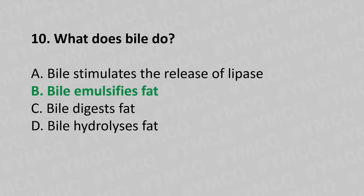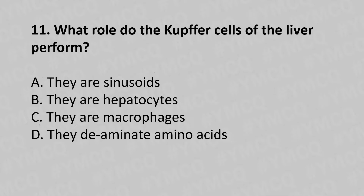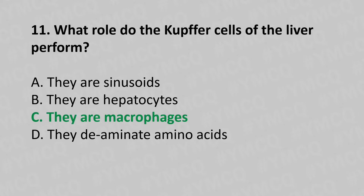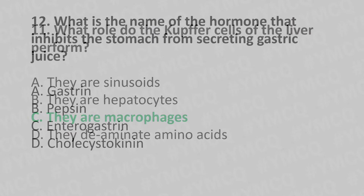Now let's move to question number 11. What role do the Kupffer cells of the liver perform? Option A: They are sinusoids. Option B: They are hepatocytes. Option C: They are macrophages. Option D: They deaminate amino acids. And the answer is Option C: They are macrophages.